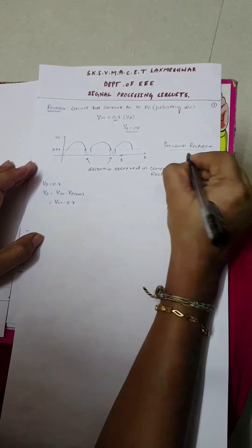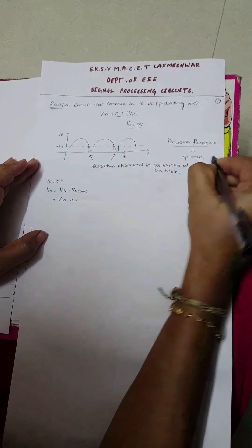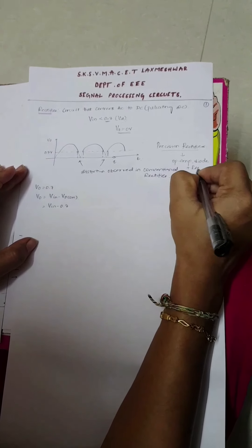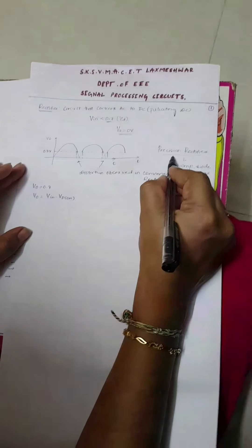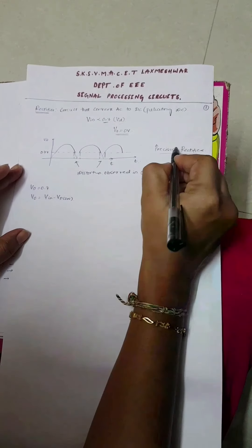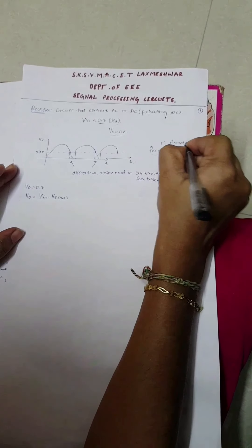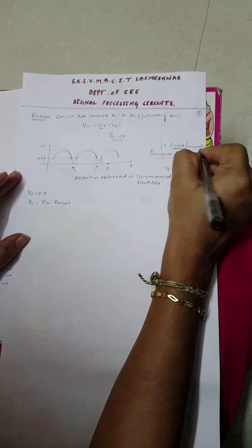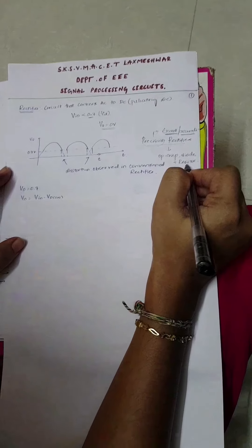These precision rectifiers are designed using an op-amp as well as diodes and resistors, all connected together to form precision rectifiers. The word 'precision' means exact — you are getting the exact or accurate output, hence we call these precision rectifiers.